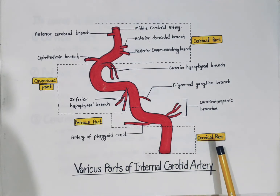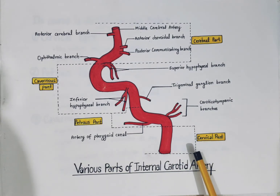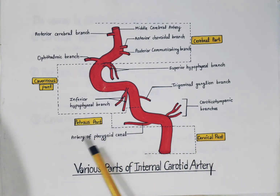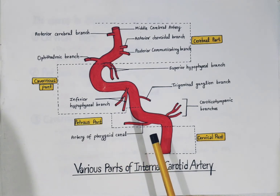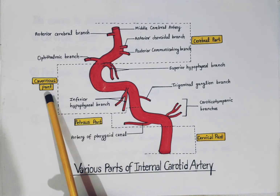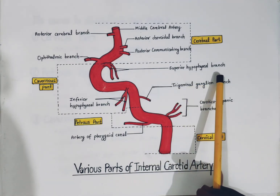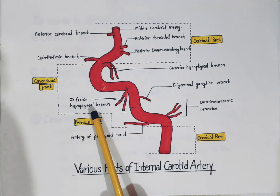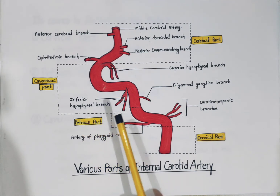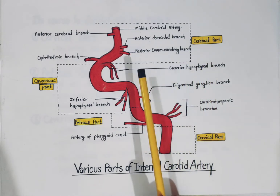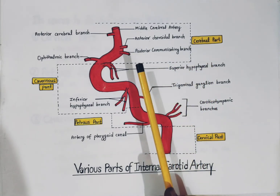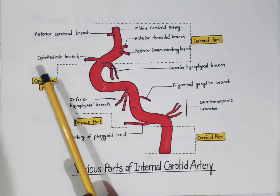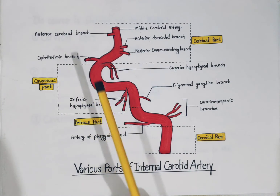The cervical part gives off no branches. The petrous part gives the caroticotympanic branch and the artery of the pterygoid canal. The cavernous part gives the superior hypophysial branch, trigeminal ganglion branch, and the inferior hypophysial branch. The cerebral part gives the middle cerebral artery, anterior choroidal branch, posterior communicating branch, ophthalmic branch, and the anterior cerebral branch.